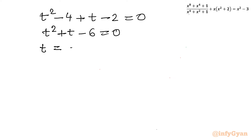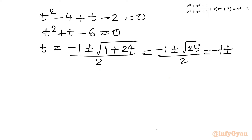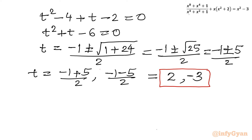Applying the quadratic formula (Sridharacharya) to t² + t - 6 = 0: t = (-1 ± √(1 + 24)) / 2 = (-1 ± √25) / 2 = (-1 ± 5) / 2. So there are two values of t: t = (-1 + 5)/2 = 2, and t = (-1 - 5)/2 = -3.